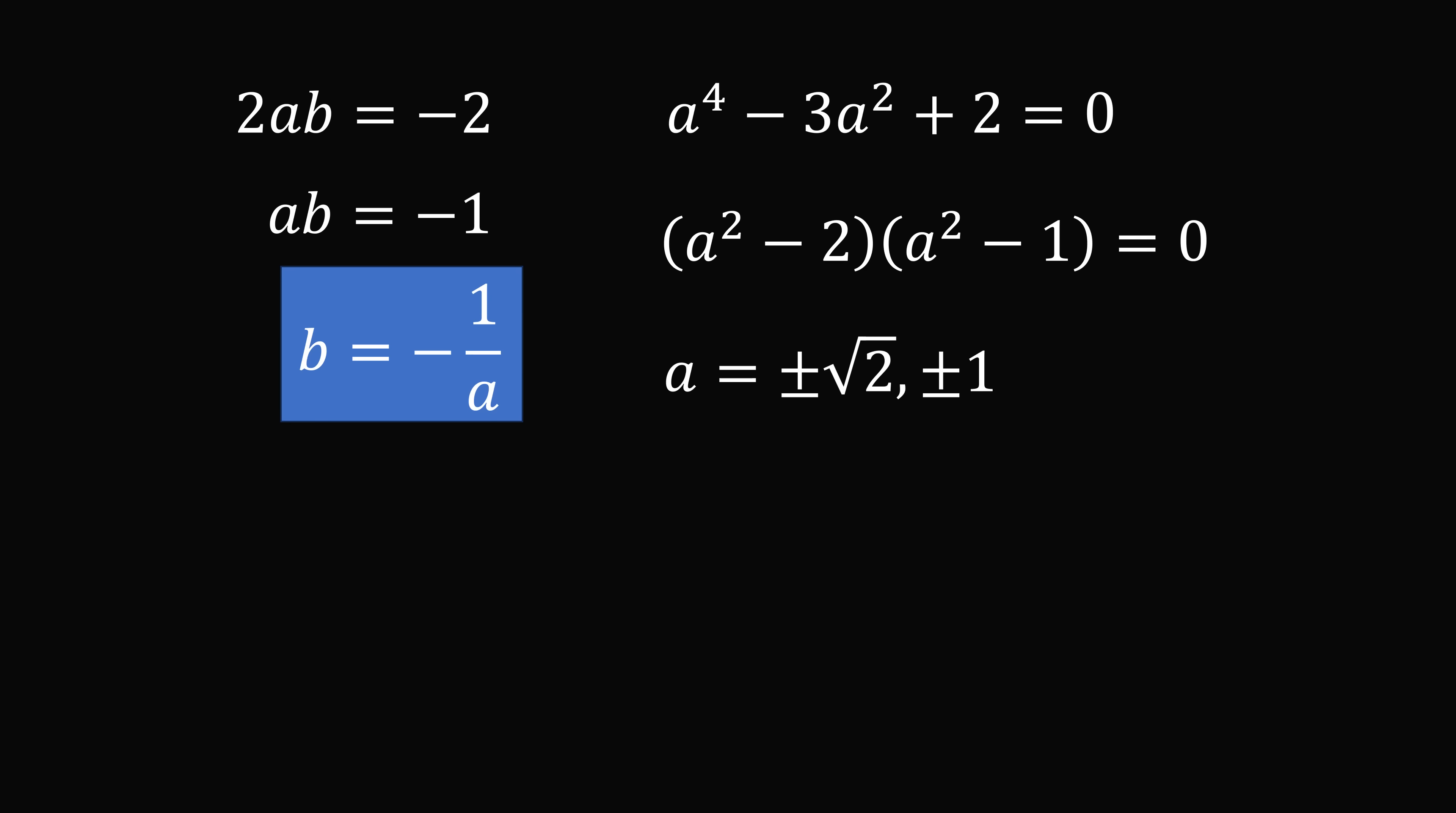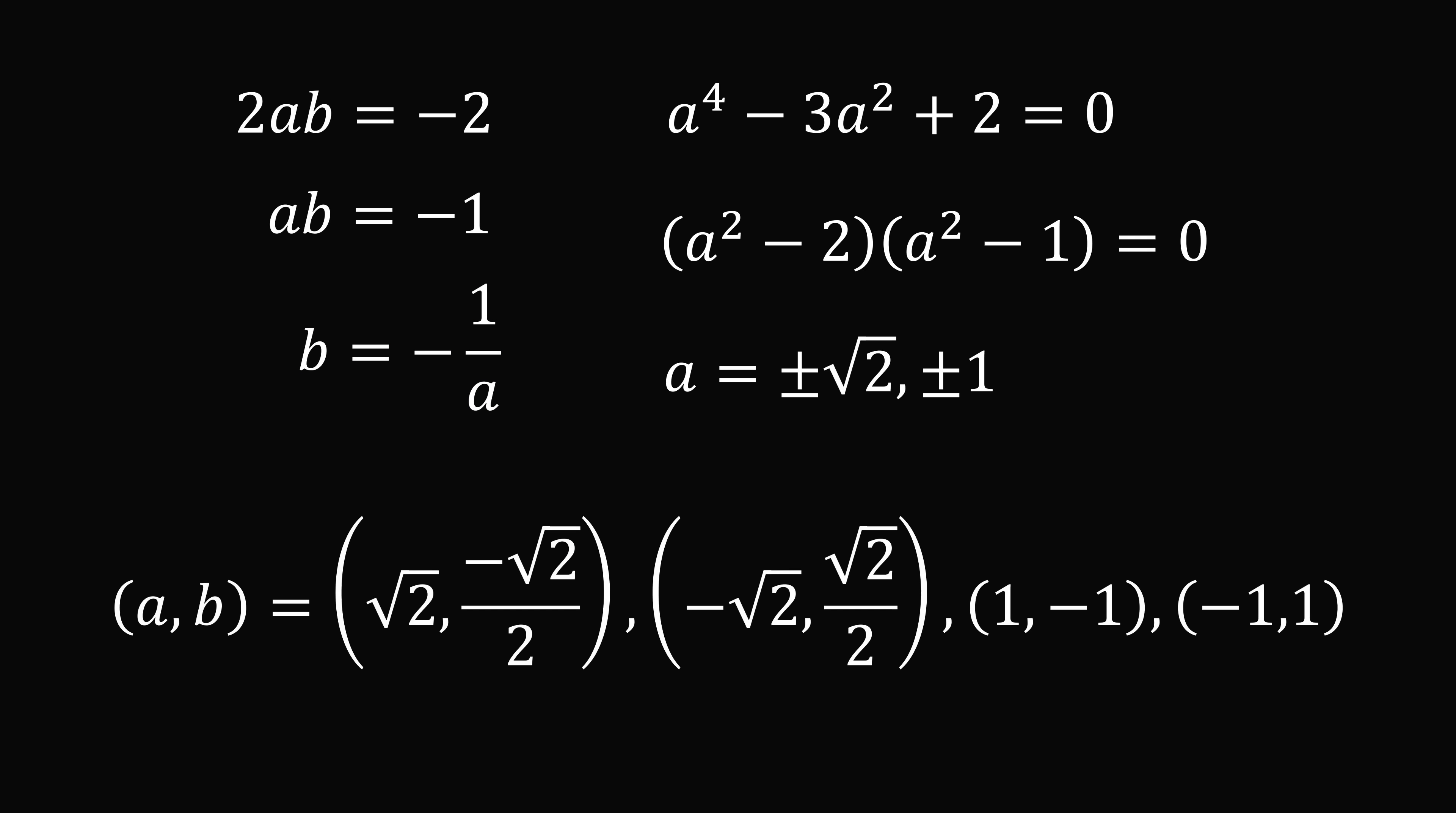So there are 4 pairs. We have ab is equal to 4 possibilities. We have root 2 comma negative root 2 over 2. The next set will be negative root 2 comma root 2 over 2. Then the third will be 1 comma negative 1, and the fourth is negative 1 comma 1.